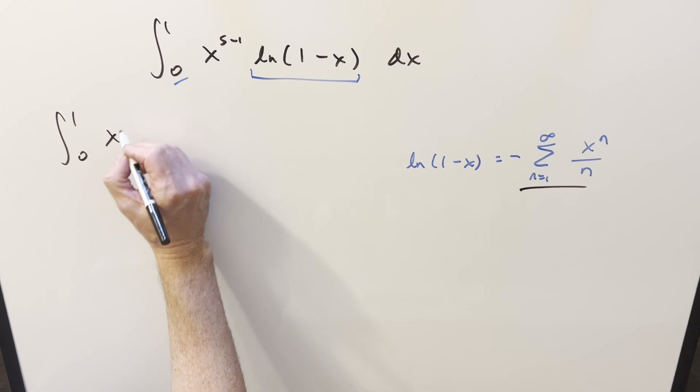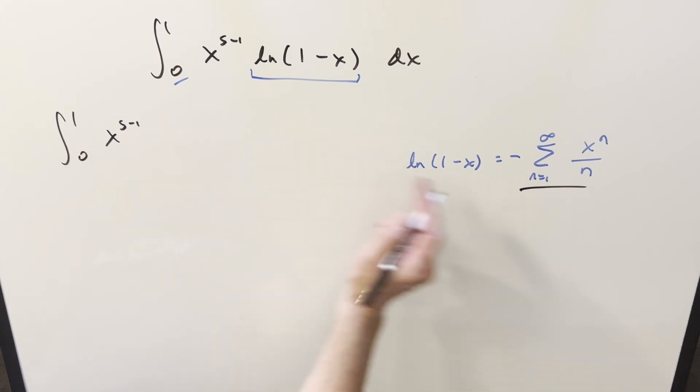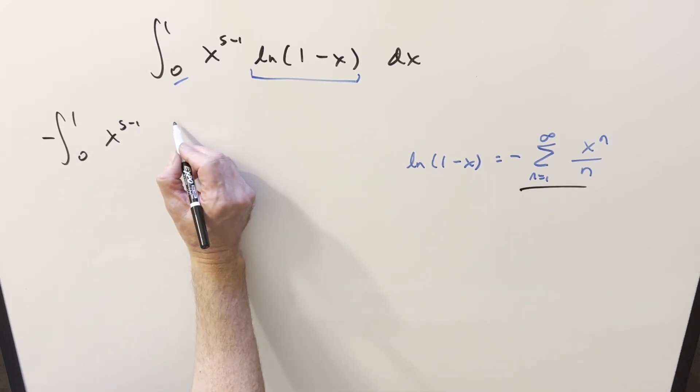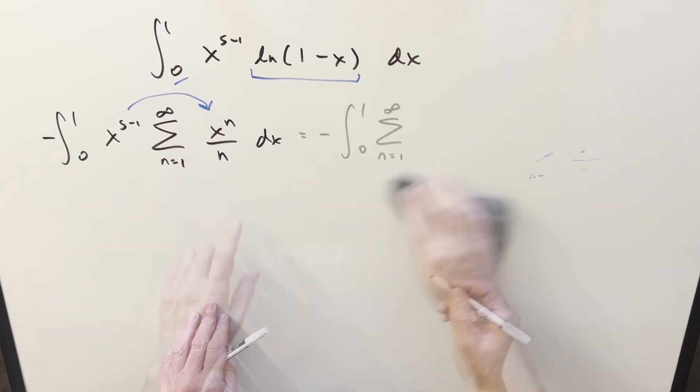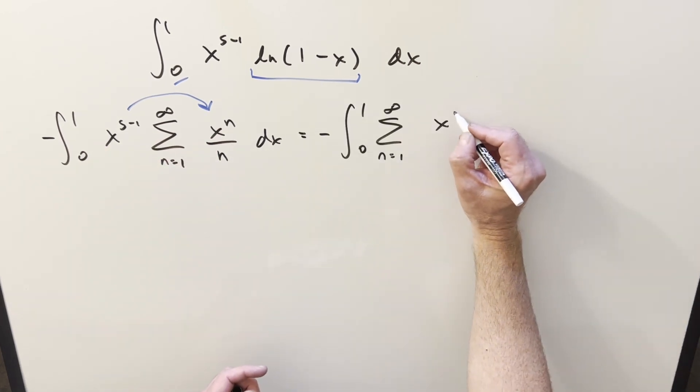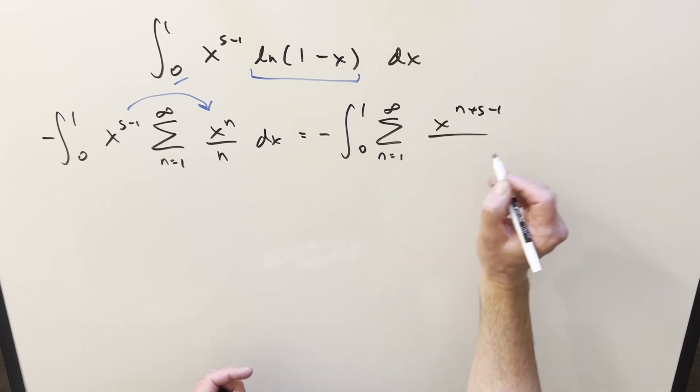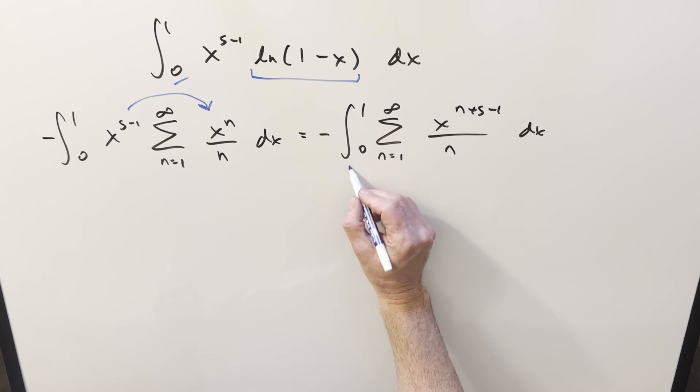So what I can do is just take this part here and plug it back into our integral. We'll still have this x to the s minus 1 piece. Then for the minus sign, let me bring the minus sign out front. And then next, let me just distribute this x to the s minus 1 inside the sum. Combine them as we've got the same base of x. So when I do that, I can write it as x to the n plus s minus 1, just combining exponents over n. And then let's just swap the order of the integral and the summation.